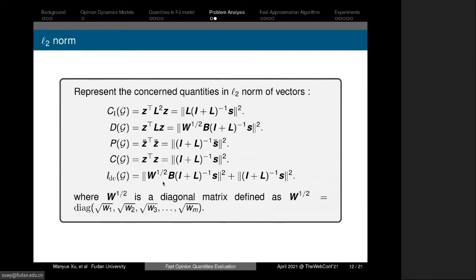We give the L2 norms of internal conflict, disagreement, polarization, controversy, and disagreement-controversy index. Their forms are similar and we try to approximate them in the next steps.